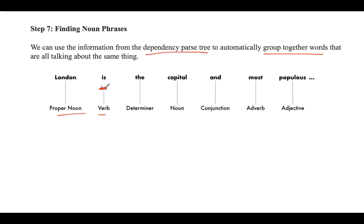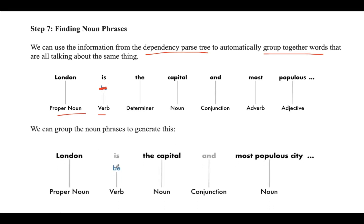We can group the noun phrases, and after grouping them you will get the result. After grouping 'the' and 'capital' — a determiner plus noun — it gives you a noun phrase, as we saw in the noun phrases concept. Similarly, combining 'most popular city' gives another noun phrase. This is a quick and easy way to simplify the sentence if we don't need extra details about which words are adjectives, and instead care more about extracting complete ideas.